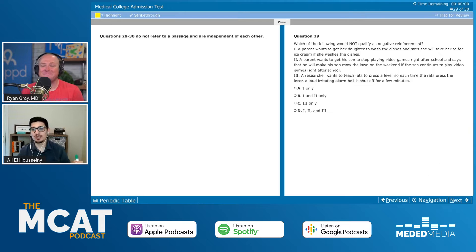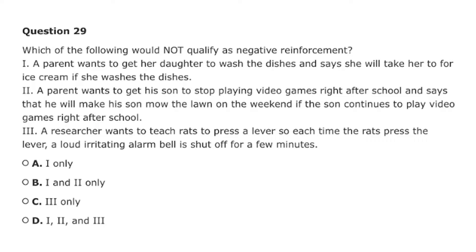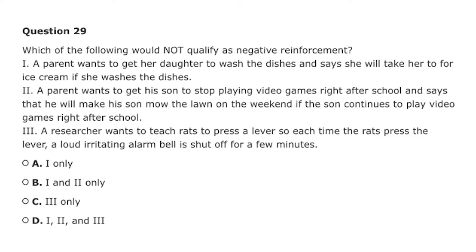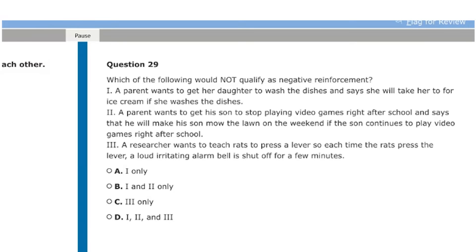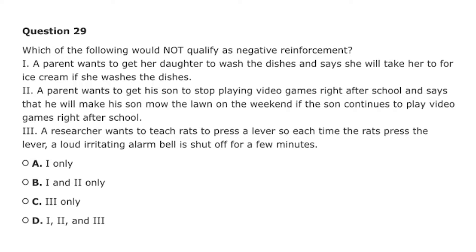Question 29 is a Roman numeral question: which of the following would NOT qualify as negative reinforcement? Before we get into the Roman numerals, let's go over negative reinforcement. The negative means taking away something to reinforce a behavior — like no chores for you because you got an A on the test. That's negative reinforcement. Since it's both a Roman numeral and a NOT question, we'll approach it systematically, starting with a Roman numeral occurring in exactly two of the answer choices to eliminate two on the first try.